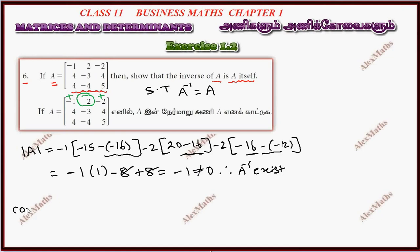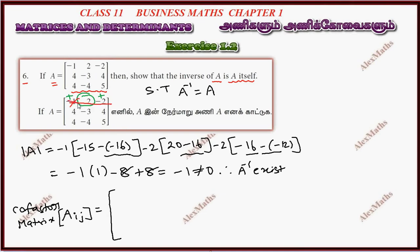Now we compute the co-factor matrix. The co-factor matrix — each element A sub i,j represents a co-factor. The first element's co-factor: we cut the row and column and evaluate. The previous sums give us the details for each element.